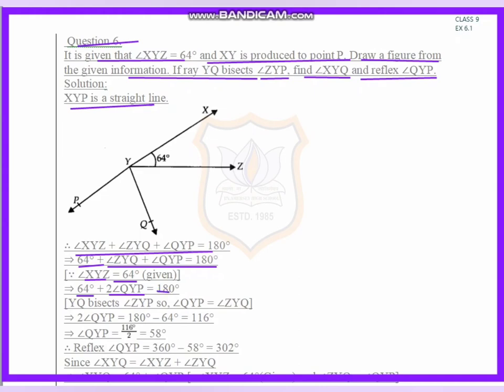We know that YQ bisects angle ZYP, so both angles are the same. So 2 times angle QYP equals 180 minus 64.